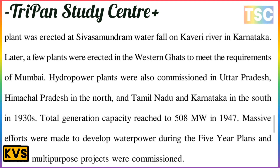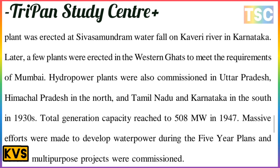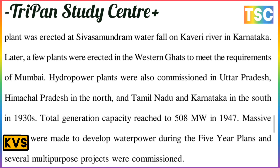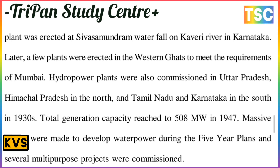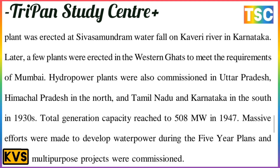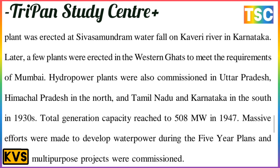Hydro power plants were also commissioned in Uttar Pradesh, Himachal Pradesh in the north, and Tamil Nadu and Karnataka in the south. By the 1930s, total generation capacity reached 508 megawatt. In 1947, massive efforts were made to develop water power during the Five Year Plans and several multipurpose projects were commissioned.